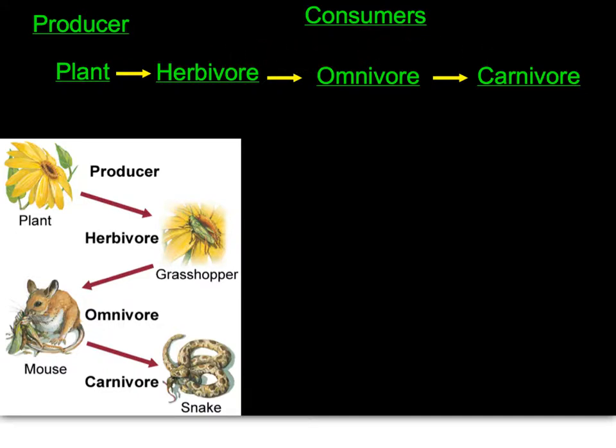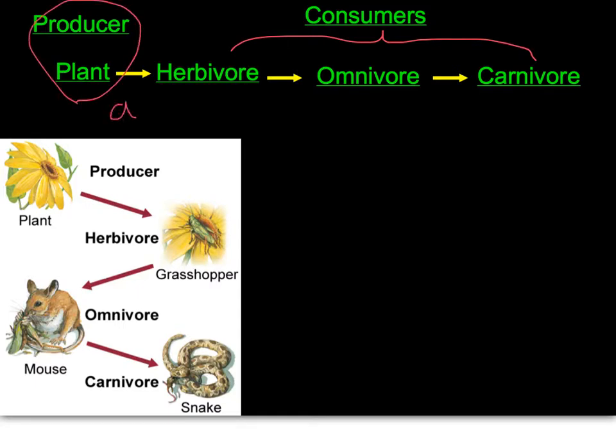You might want to do a bracket indicating that these three organisms are all consumers, and label that this is your autotroph.